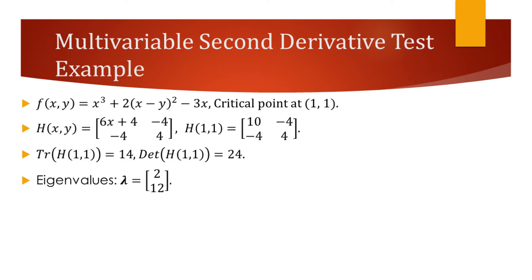Consider the following function. We are given that the critical point of this function is at (1, 1). Our task is to determine whether this critical point is a local maximum, a local minimum, or a saddle point.